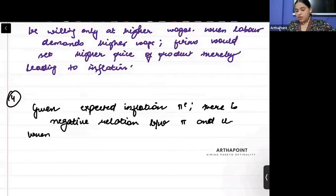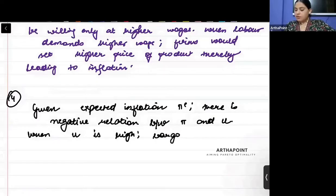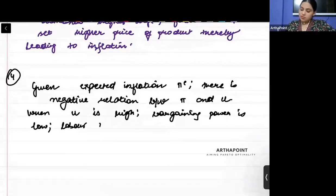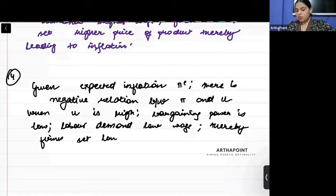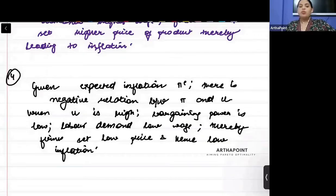When unemployment rate, please write the entire line. Don't write u, write complete sentences. When unemployment rate is high, bargaining power is low. Labor demands low wage, thereby firms set low price, and hence low inflation. Hence low inflation.